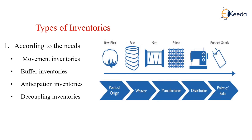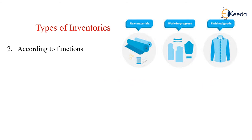In each of these cases, we are having some amount of inventories which are present either in the raw fiber state, or in the bale state, or in the yarn state, or in the fabric state, or even in the finished goods state. So all these inventories are generally called as either the movement inventories, buffer inventories, anticipation inventories, decoupling inventories, or the cycle inventories.